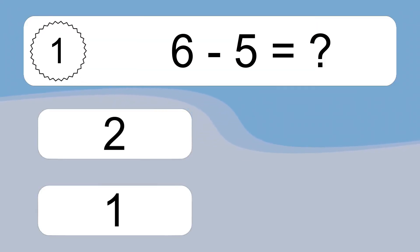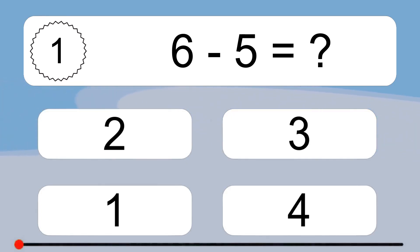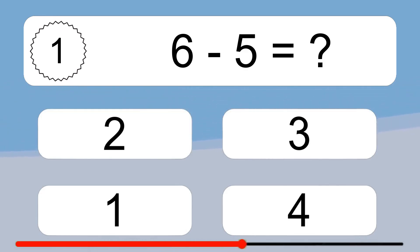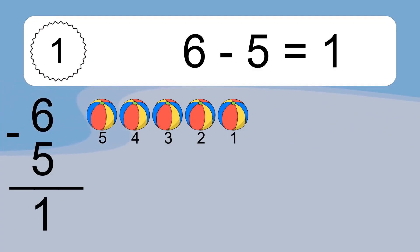6 minus 5 equals what? 6 minus 5 equals 1. Let's count it. 5, 4, 3, 2, 1.